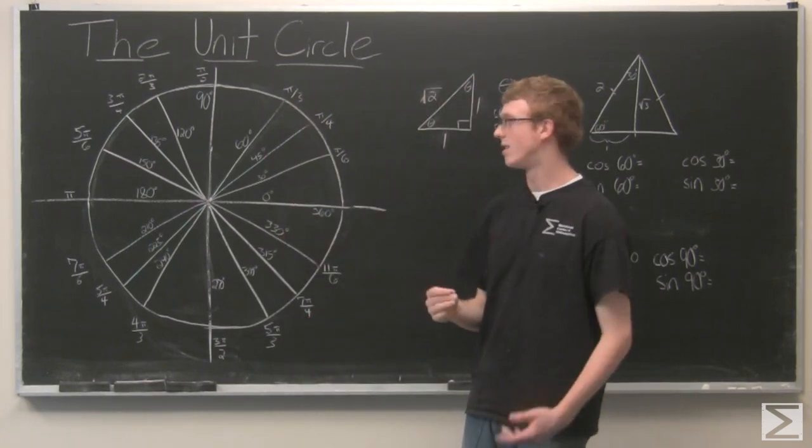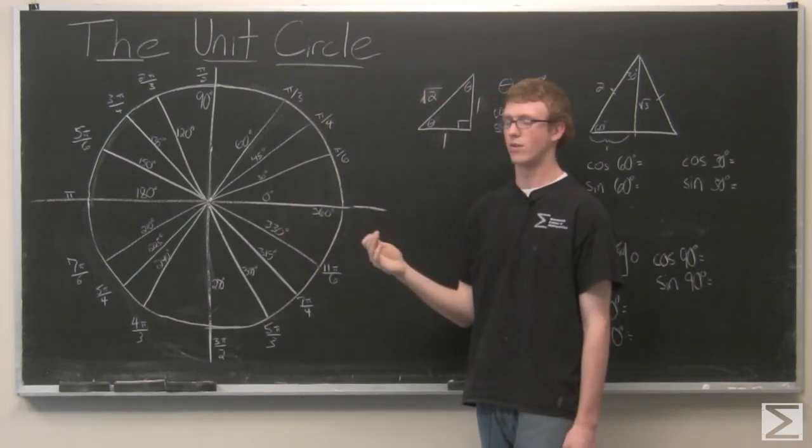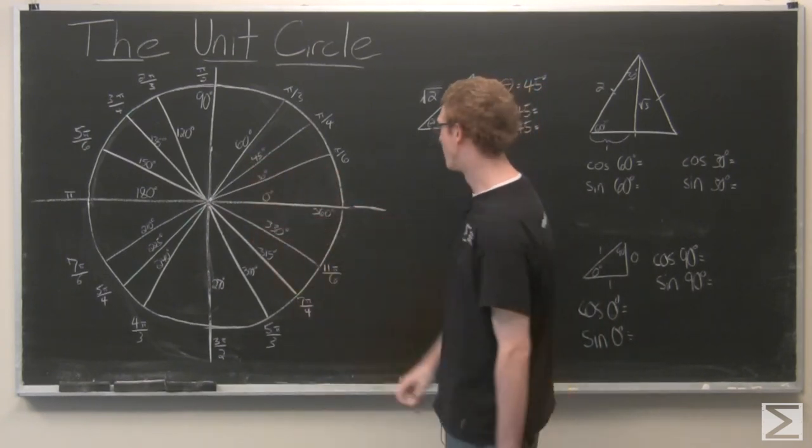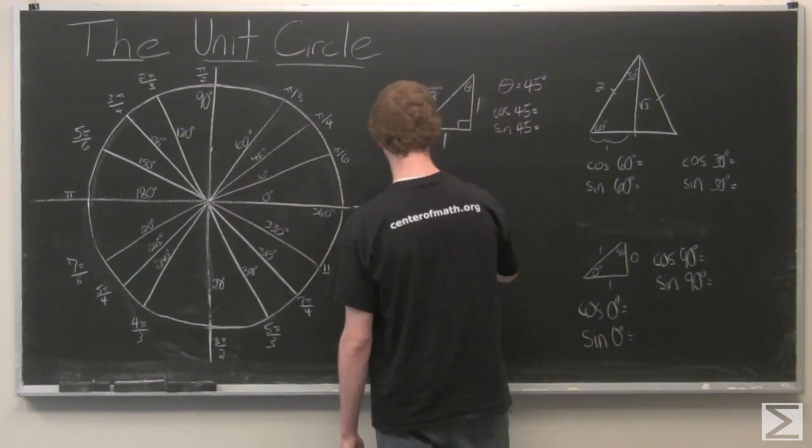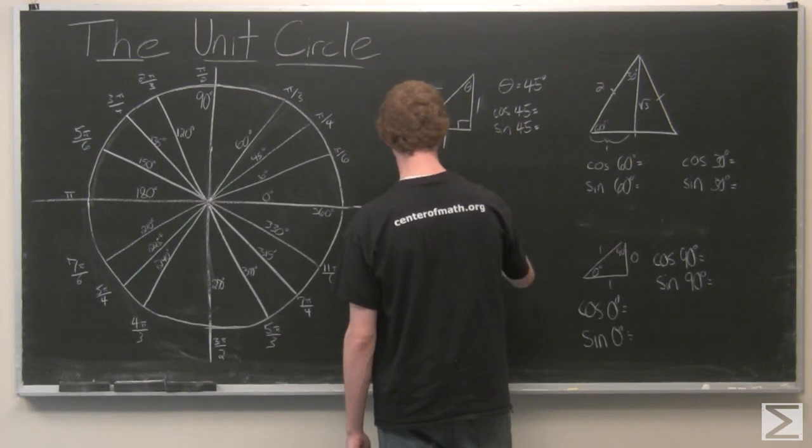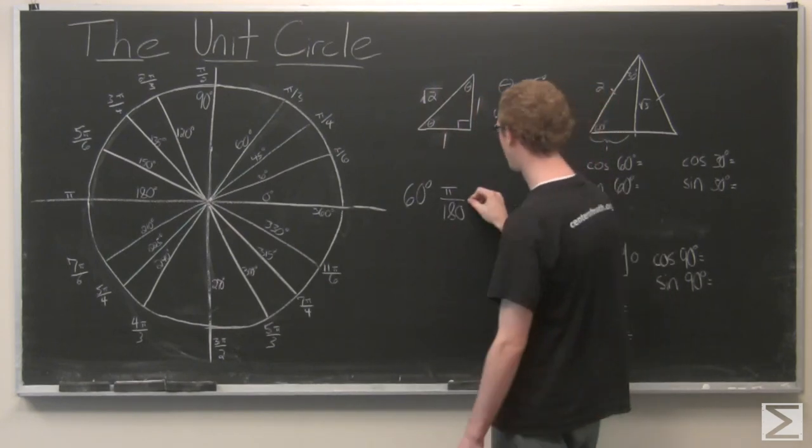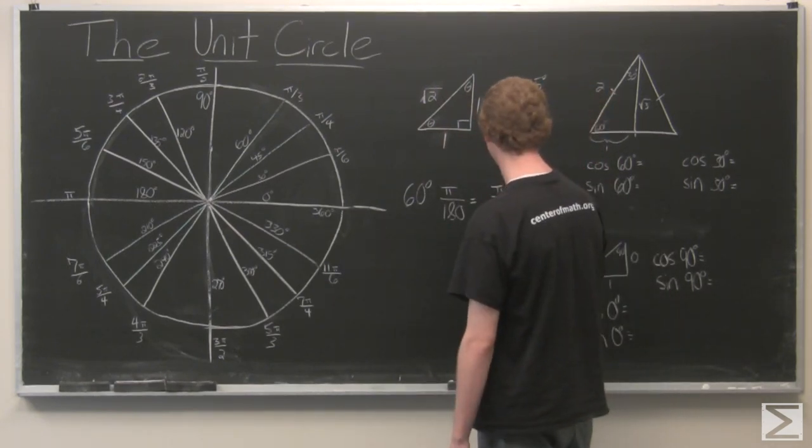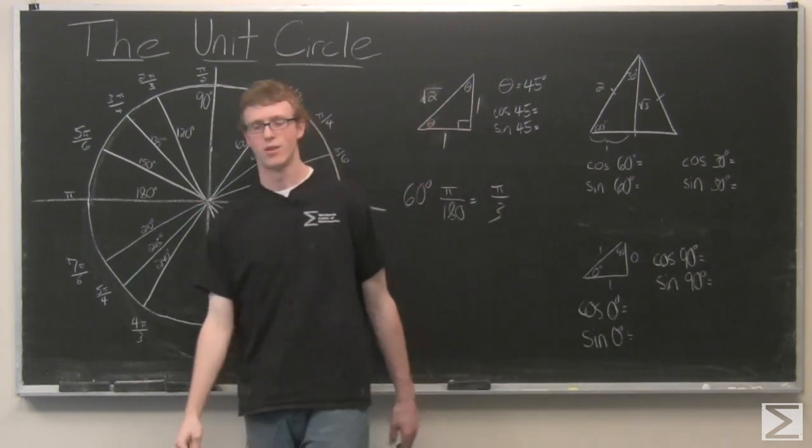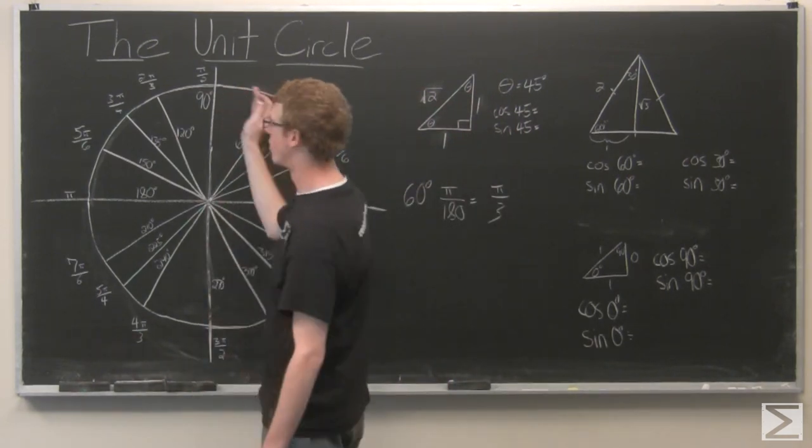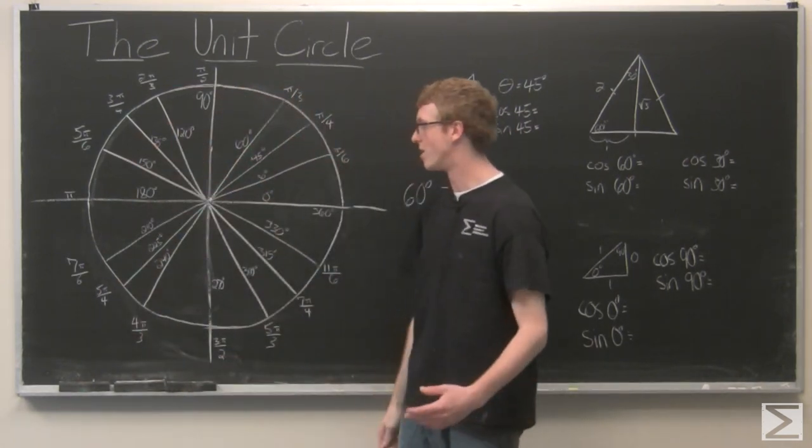In order to find this, all you need to do is multiply the degrees by pi over 180. So for example, 60 degrees times pi over 180 is simply pi over 3. So we can go around the whole entire circle and measure out the angles.